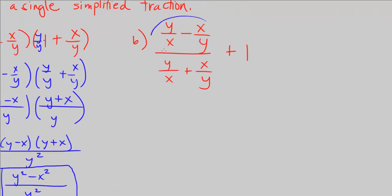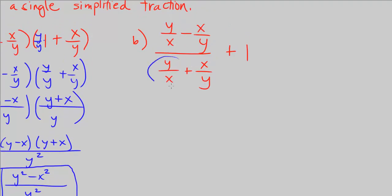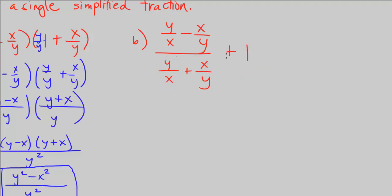Let's go on to part b. Part b we have y over x minus x over y, divided by y over x plus x over y, plus 1. So let's go ahead and work on these individually.